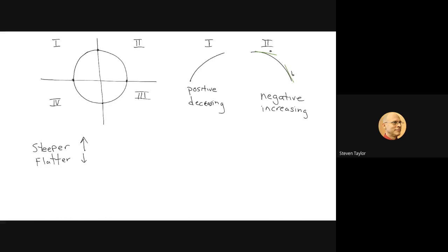Region three — if I just isolate that region, it is going uphill from left to right, so it's positive. And because the slope is getting steeper as I check it from left to right, I'm going to call this one positive increasing.